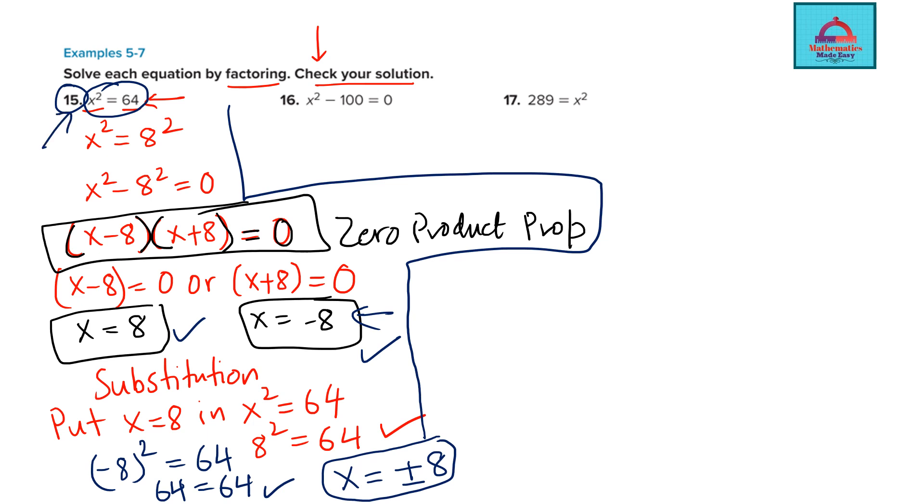Similarly, you can do question 16. You see 100 is a perfect square: x² - 10² = 0. One value is x + 10, one is x - 10. You can put that back in the equation and check by substitution.